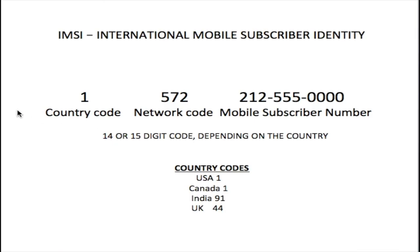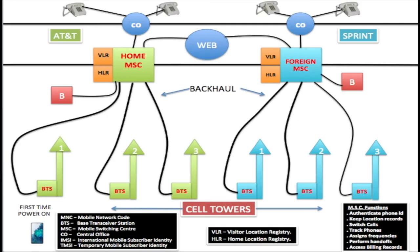The IMSI code contains the country code — for the USA it's 1, Canada is 1, India is 91, UK is 44, and every country is different. Then there's the three-digit network code, which is unique to the provider you're on. And finally the 10-digit phone number. This IMSI code — the International Mobile Subscriber Identity — is sent from your phone back to the MSC.